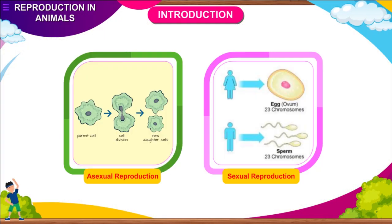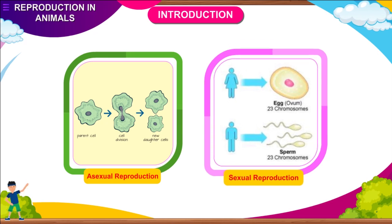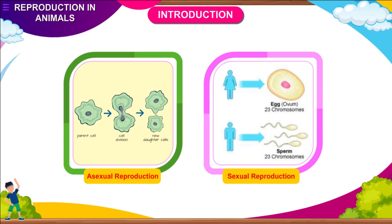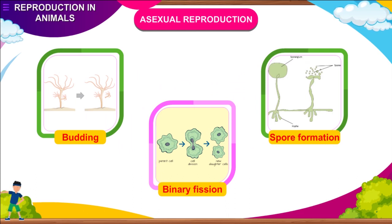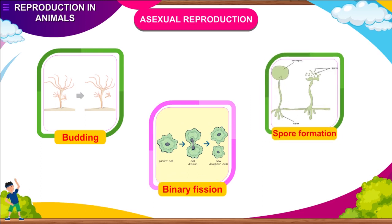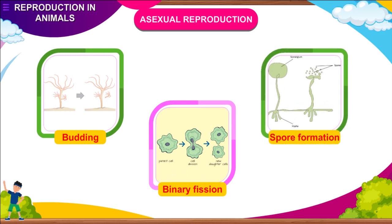Reproduction may take place by either of the following methods. In Asexual Reproduction, only one parent is involved. Asexual reproduction takes place through budding, binary fission, spore formation, or fragmentation.